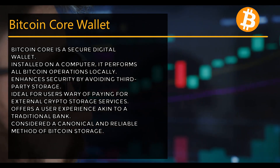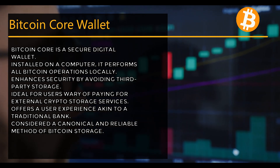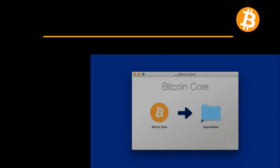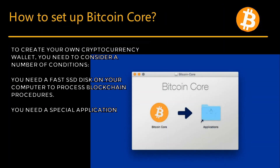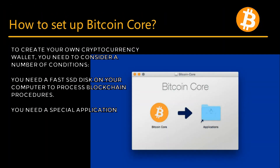Bitcoin Core is considered a canonical and reliable method of Bitcoin storage. To create your own cryptocurrency wallet, you need to consider a number of conditions: you need a fast disk on your computer to process blockchain procedures, and you need a special application.